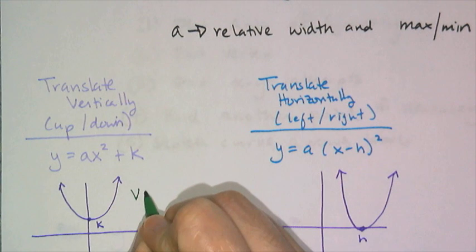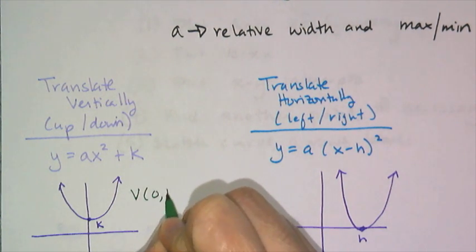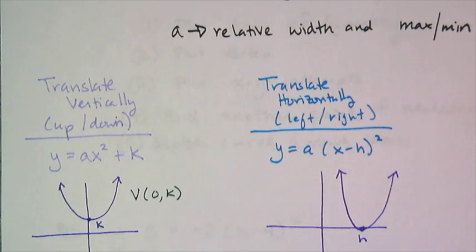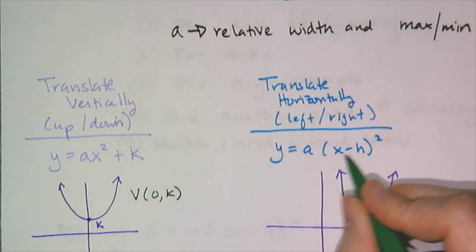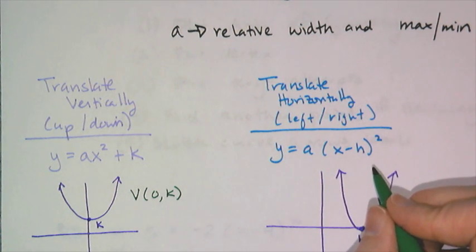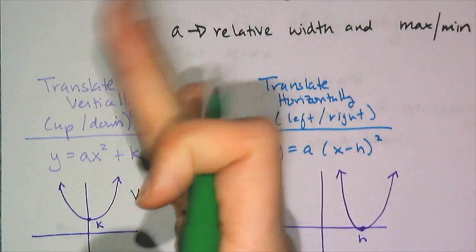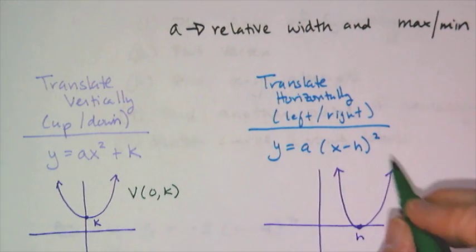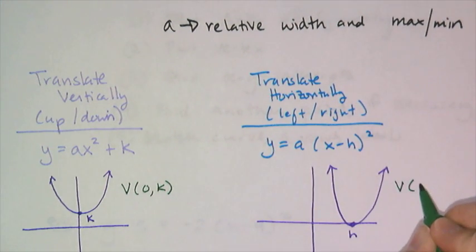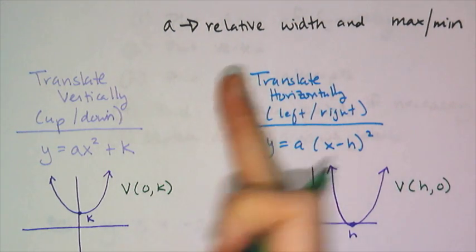Remember, horizontal translation, meaning shifting left or right, inside the parentheses, I have to take away something from the x to change where the 0 is going to be. And so now in this case, my vertex is located at (h, 0). And that's a translation left or right.